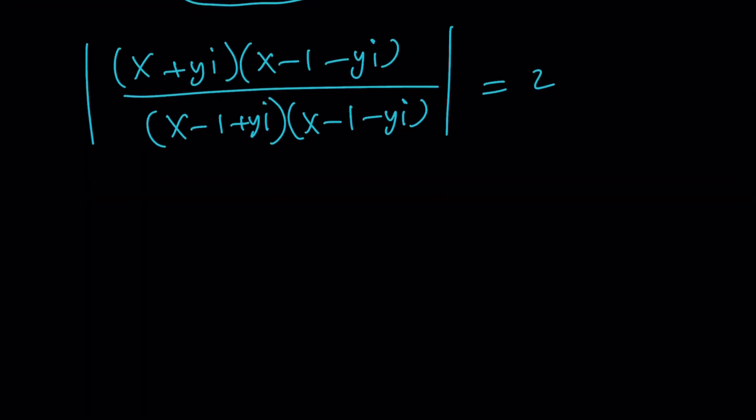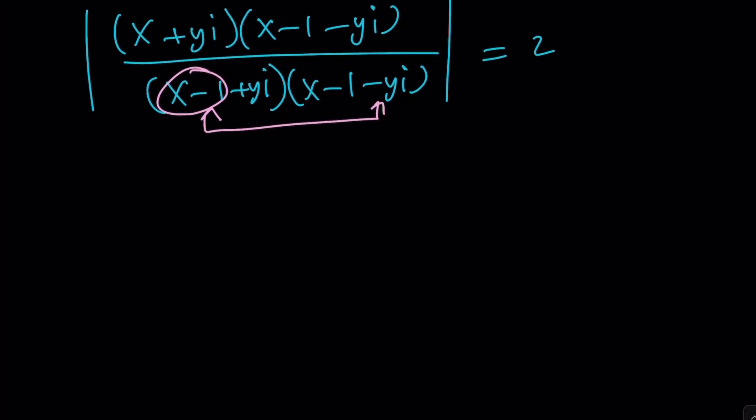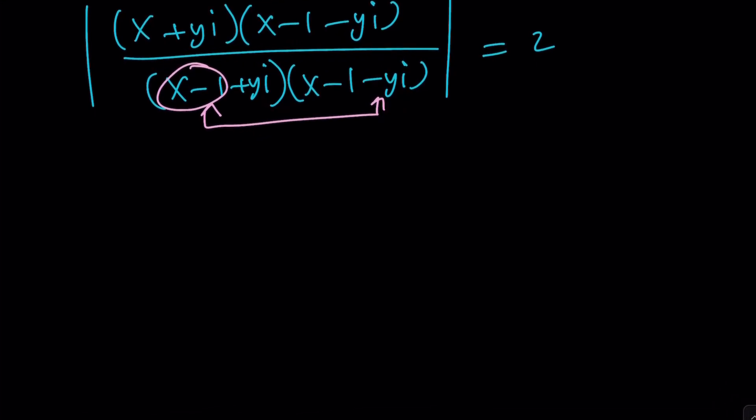Let's go ahead and simplify at the bottom, and on top. When you multiply these two things, notice that A squared plus B squared, you get sum of two squares. So, at the bottom you're going to have x minus 1 squared plus y squared. It's not a difference, it's a sum.